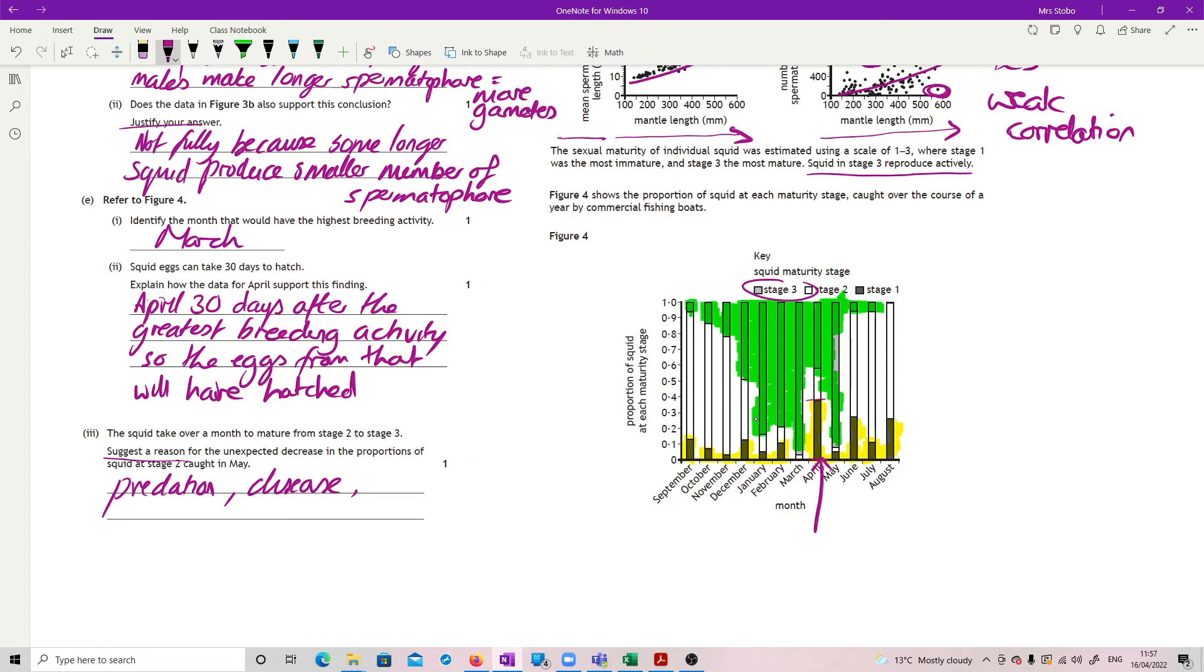Disease. Competition. And any of those. I think predation is probably your best one. Predation or disease. They even had ecological disaster. Something quite dramatic that could have happened to cause the unexpected decrease. But anything reasonable.